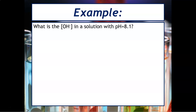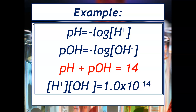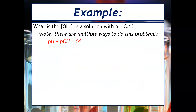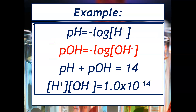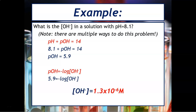Here's another one. What's the OH minus concentration in a solution where the pH is equal to 8.1? There are multiple ways to do this problem. I chose to use pH plus pOH equals 14: plug in pH of 8.1, subtract from both sides, and get pOH equal to 5.9. Then, using pOH equals negative log of OH minus concentration, move the negative sign to the other side and take the anti-log to get a hydroxide ion concentration equal to 1.3 times 10 to the minus 6 molar.